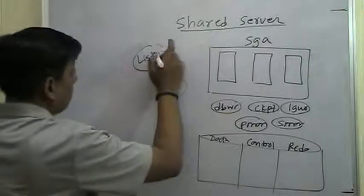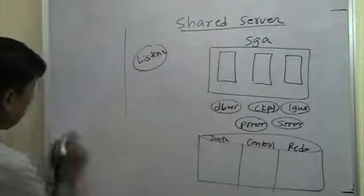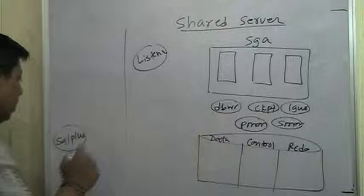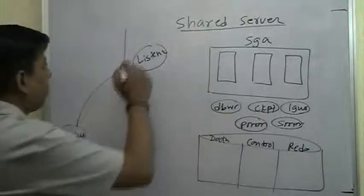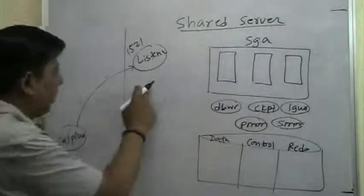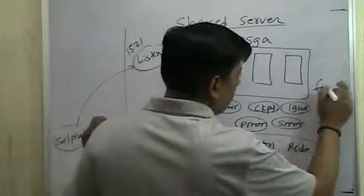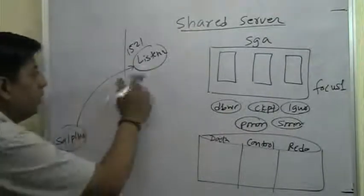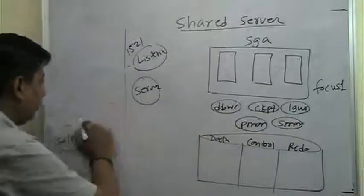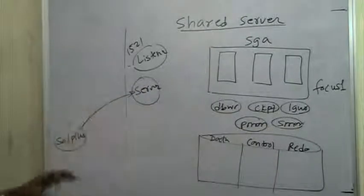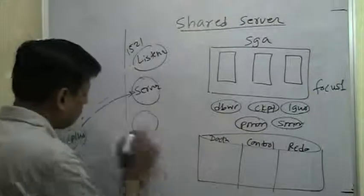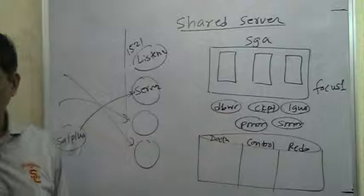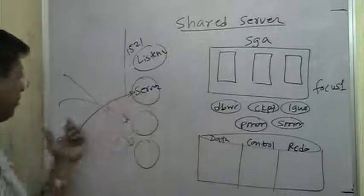We have seen the listener - all this stuff is on one machine. On the client machine we have SQL*Plus; usually the client is on a different machine and the Oracle server is on a different machine. The client initially contacts the listener on port 1521. The listener says you would like to connect to the database - our database was called focus one - and starts a dedicated server process for you. You then contact that dedicated server process.